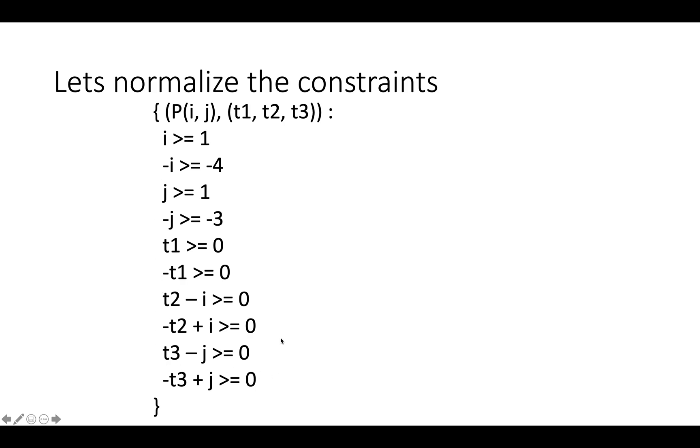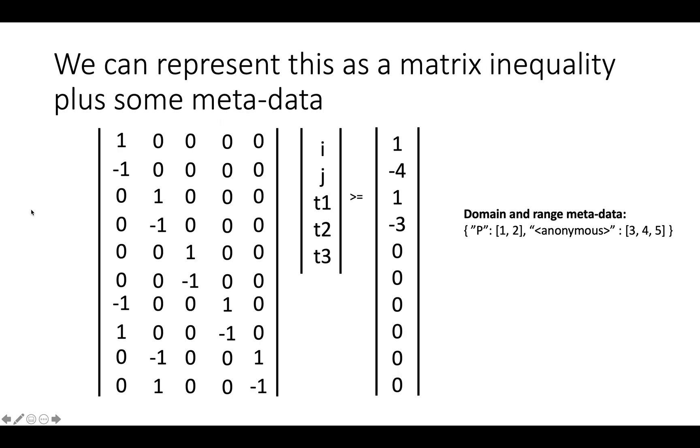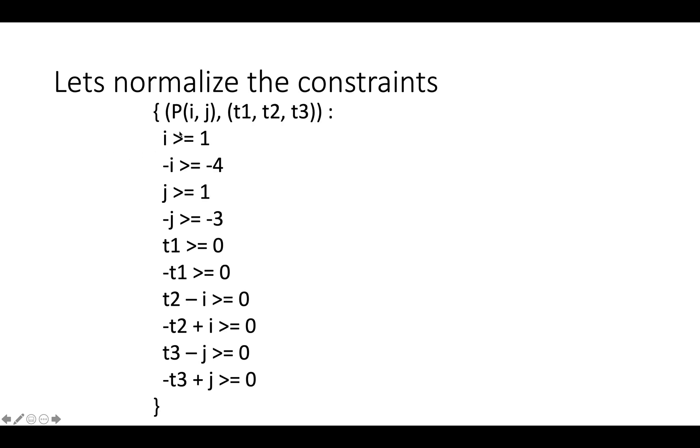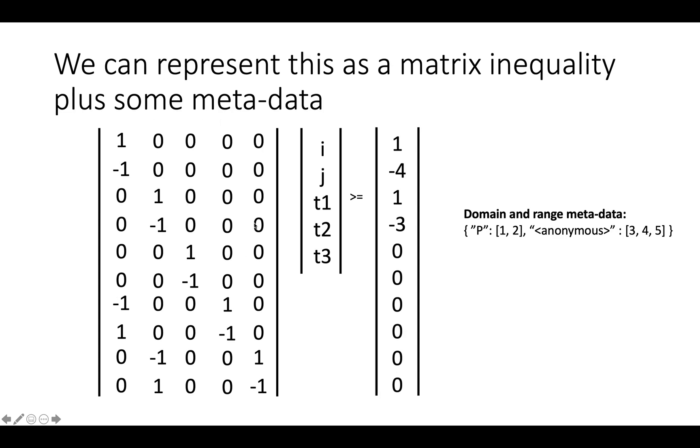We can represent this whole thing as a matrix inequality plus some metadata. In the computer we can actually store this matrix which represents the coefficients on all of the constraints. There's one row in this matrix for each of these different constraints, so there's one, two, three, four, five, six, seven, eight, nine, ten constraints, and there are one, two, three, four, five, six, seven, eight, nine, ten rows in the matrix.